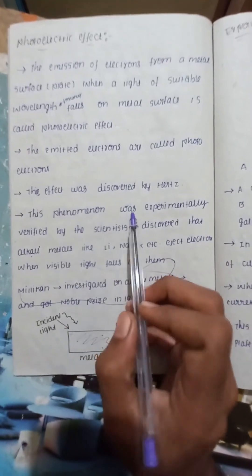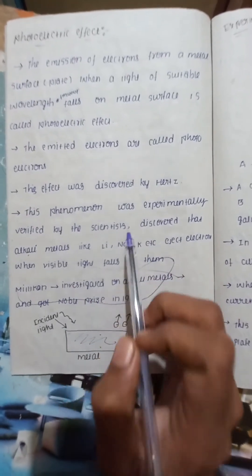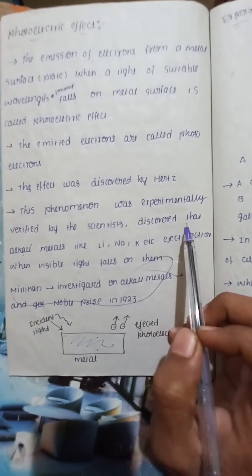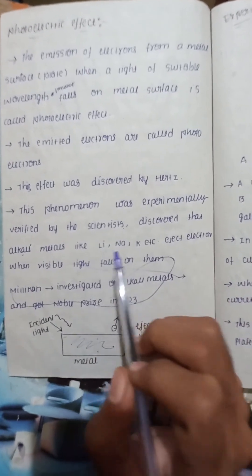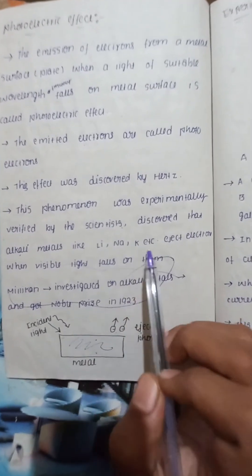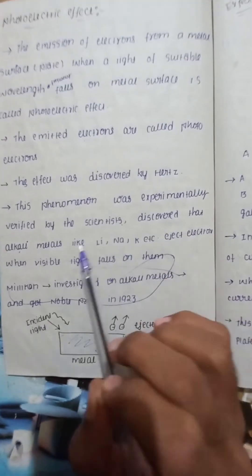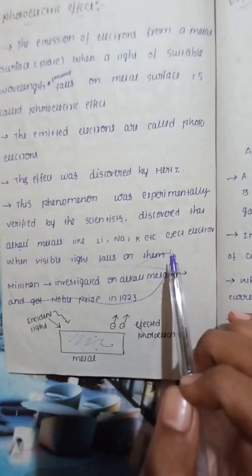This phenomenon was experimentally verified by scientists, who discovered that alkali metals like lithium, sodium, potassium, etc. eject electrons when visible light falls on them.